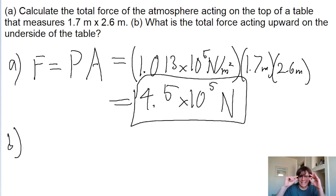There might be a tiny pressure difference due to the thickness of the table, but that's usually negligible when we're talking about air pressure. So the pressure magnitude is the exact same. It's once again going to be 4.5 × 10^5 newtons.